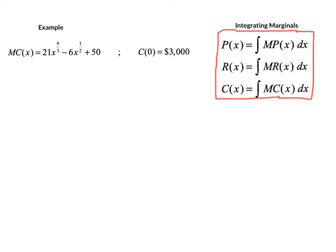There's a slight problem with this, though. Looking at our example, we have a marginal cost function: 21x to the 4/3 minus 6x to the 1/2 plus 50. By this definition, our cost function is going to be the integral of this. So we integrate our function — don't forget your dx differential here.